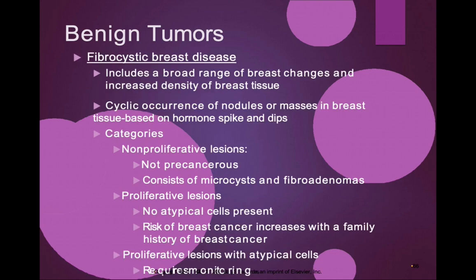Fibrocystic breast disease, or FBD, includes a broad range of breast changes and increased density of breast tissue. There are cyclic occurrences of nodules or masses based on hormonal fluctuations. Non-proliferative lesions are not precancerous — these consist of microcysts and fibroadenomas. Proliferative lesions without atypical cells increase breast cancer risk particularly with a family history. Proliferative lesions with atypical cells require routine monitoring.